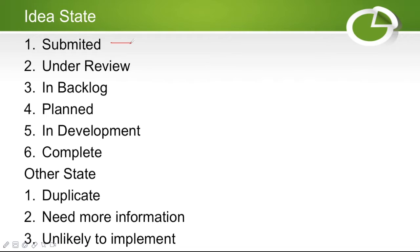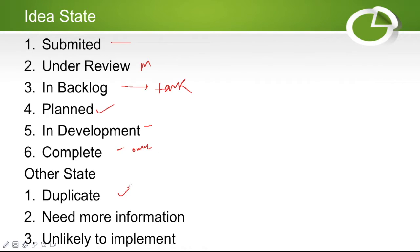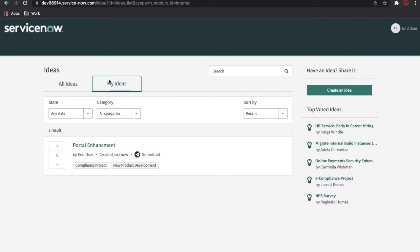Whenever you create an idea it goes to 'Submitted' state. The flow is: the end user submits the idea, a manager reviews it, then a task is created — which can be a story, demand, or project — and it moves to 'Backlog', then 'Planned', then 'Development', and finally 'Completed'. The submitter gets an email notification. Other states include 'Duplicate', 'Need More Information', and 'Cannot Be Implemented'.